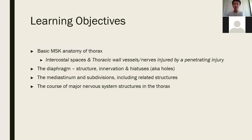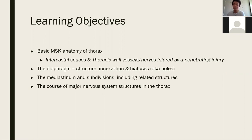At the start of each section — thorax, cardio, and back — there are a few learning objectives taken from the pack book and tutorial information. These provide a brief and concise guide for you to base your studies around and give some direction to this lecture. They represent a happy medium between bare minimum topics and excessive topics like everything in the textbook. As a general rule, if it isn't a learning objective here or in your book, it isn't likely to be of much importance for your clinical years or your exam.